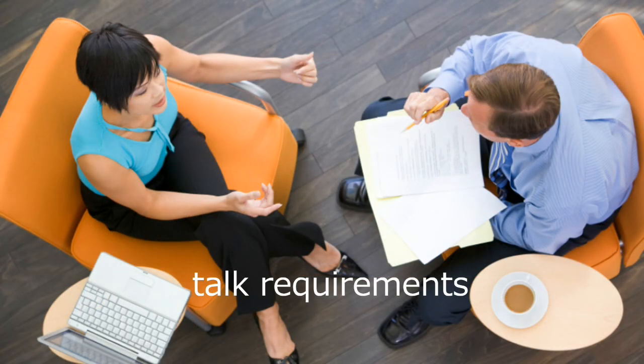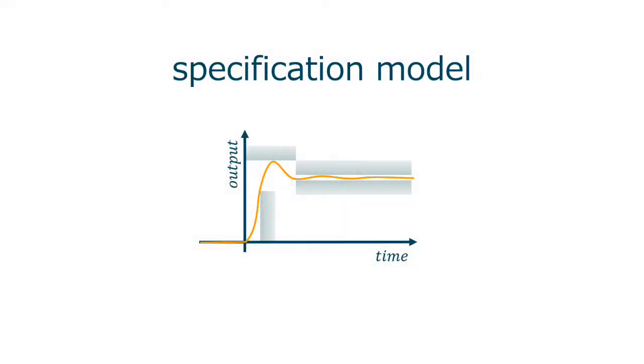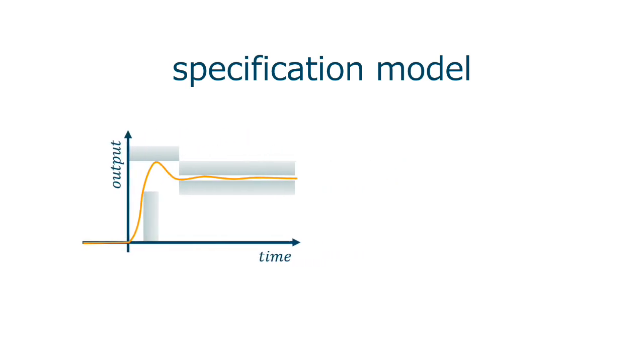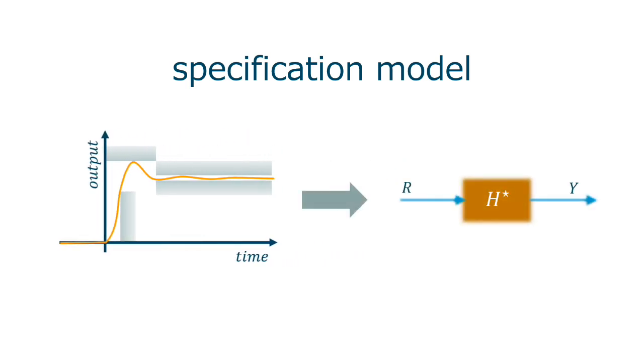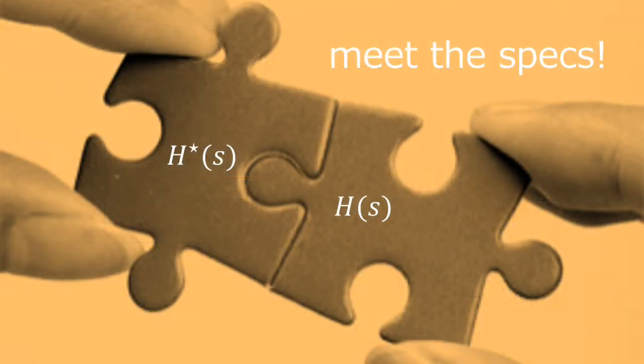So, when we are talking requirements with our client, we start by a specification model. And, from this specification model, we try to translate this in an H star, so a desired function, that is represented by a second-order system. Then, the next step is to meet the specs. Meeting the specs is then to design a control system that matches as close as possible this H star, this desired model, this specification model.